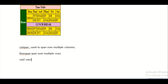td stands for table data and th stands for table header. Both table headers and table data can span across rows and columns. This is similar to the merge option in Excel spreadsheets — colspan and rowspan provide the same functionality as merging cells.